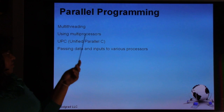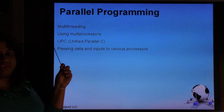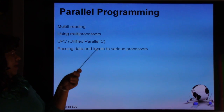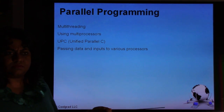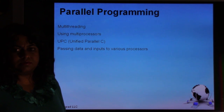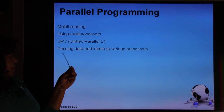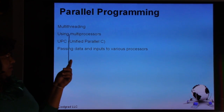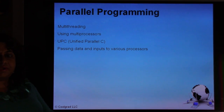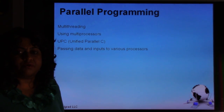Parallel Programming covers multi-threading using multiple processors. For example, George Washington University and Michigan Tech developed a language called UPC (Unified Parallel C) — it's C programming with multi-threading. You use multiple parallel processors to execute the same program, passing data and inputs to various processors, and show it can be done faster without corrupting the data.